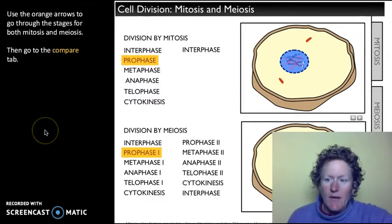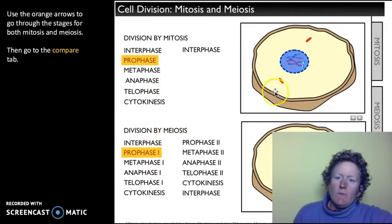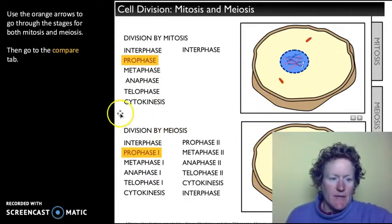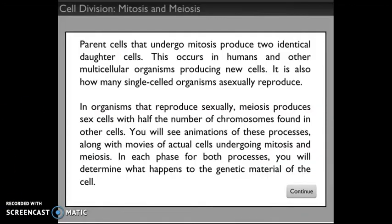Finally, we'll get to the compare tab and look at the differences in these phases — we can watch mitosis and meiosis happen at the same time. Parent cells that undergo mitosis produce two identical daughter cells. Mitosis is just for reproducing all the regular cells in your body, like nose cells, ear cells, toe cells, and finger cells that wear out and need to be replaced on almost a daily basis. It also occurs in many single-celled organisms that asexually reproduce.